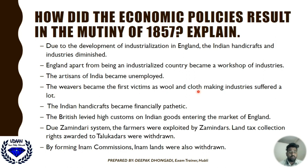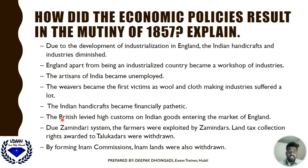The weavers became the first victims as wool and cloth-making industries suffered greatly due to industrialization in England. Indian handicrafts became financially pathetic — Indians became poorer and poorer. The British levied high customs on Indian goods entering the market of England. Due to the Zamindari system, farmers were exploited by Zamindars. Land tax collection rights awarded to Talukdars were withdrawn, and Inam lands were also withdrawn through the Inam commission.